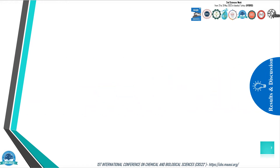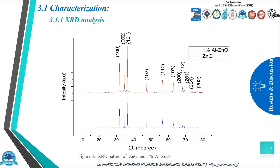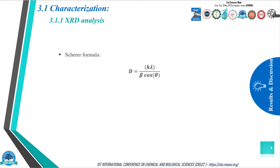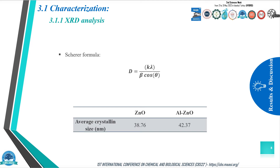We pass to results and discussion with characterization and XRD analysis. The XRD pattern of zinc oxide and aluminum-doped zinc oxide are shown in Figure 3, respectively. Eleven peaks of the spectrum have been detected and correlated to the hexagonal crystalline plane of zinc oxide with good crystalline quality and well-defined sharp peaks. Using the Scherrer formula, we could calculate the average crystalline size at 38.76 nanometers and 42.37 nanometers for zinc oxide and aluminum-doped zinc oxide, respectively.